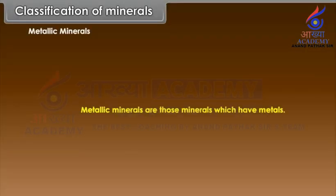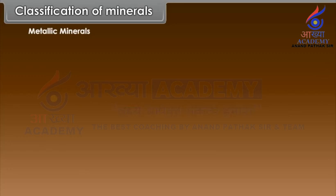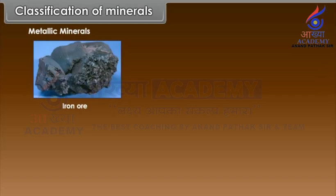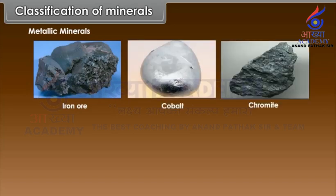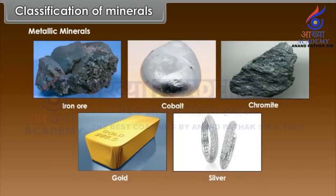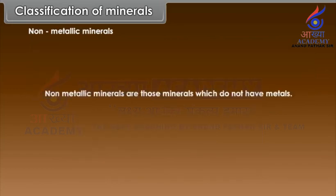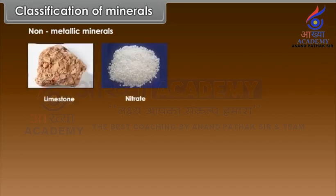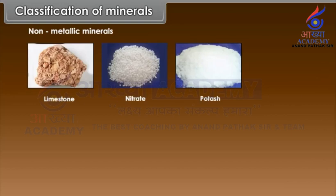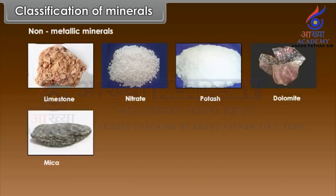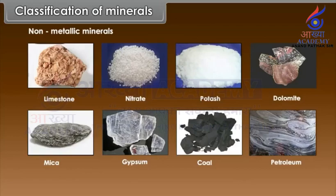Metallic minerals are those minerals which have metals. Examples: iron ore, cobalt, chromite, gold, silver, etc. Non-metallic minerals are those minerals which do not have metals. Examples: limestone, nitrate, potash, dolomite, mica, gypsum, coal, petroleum, etc.